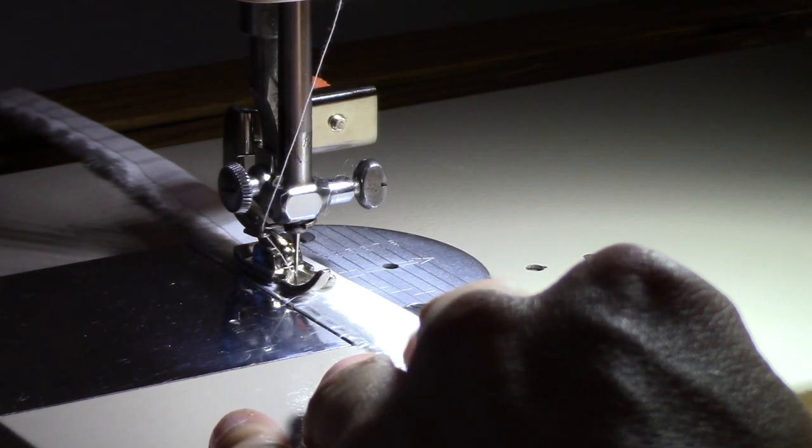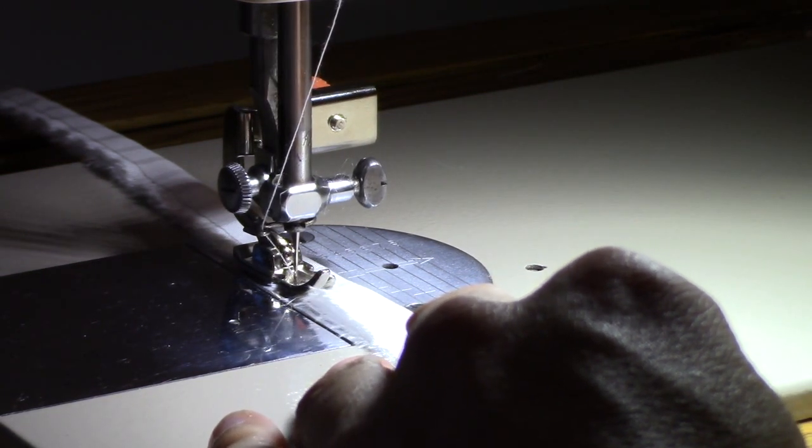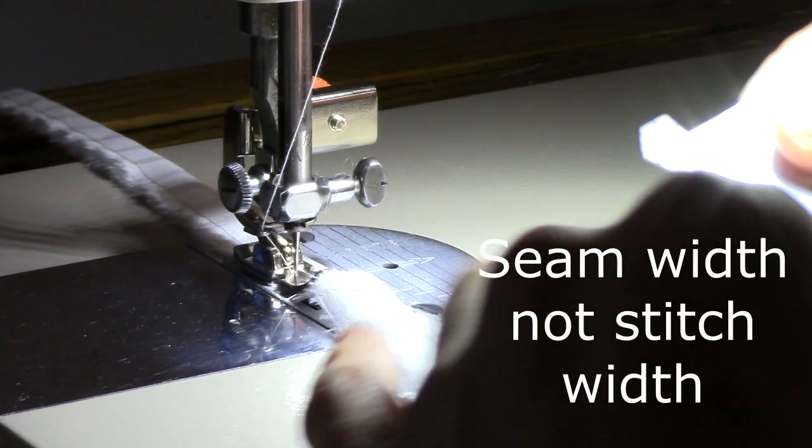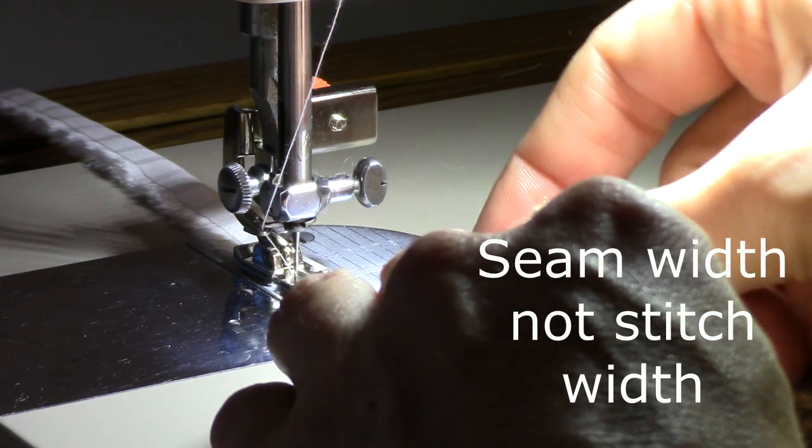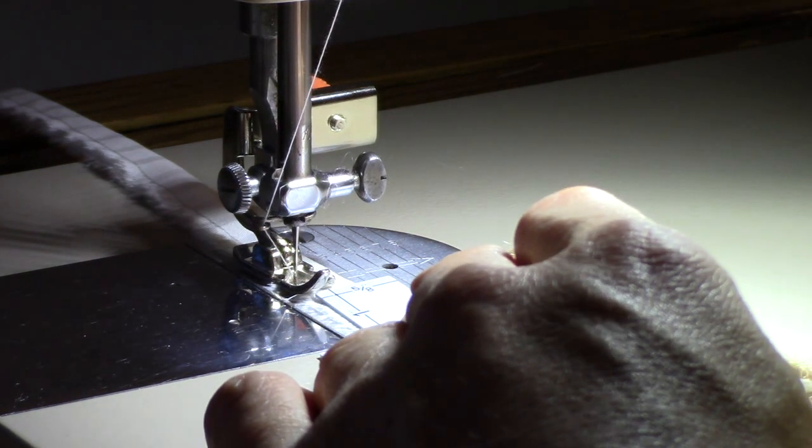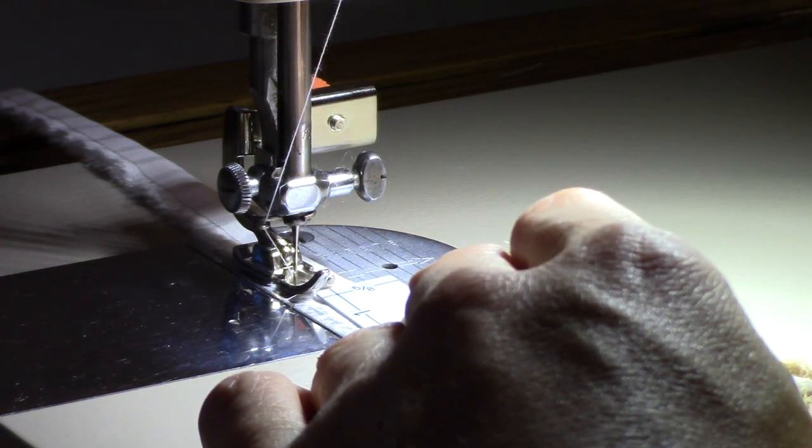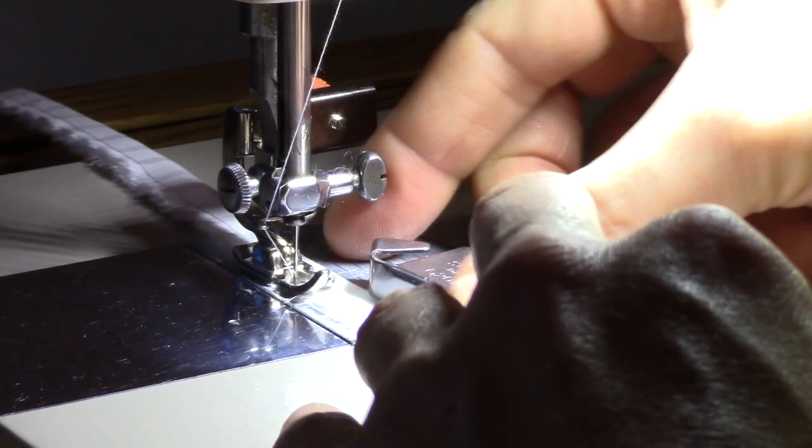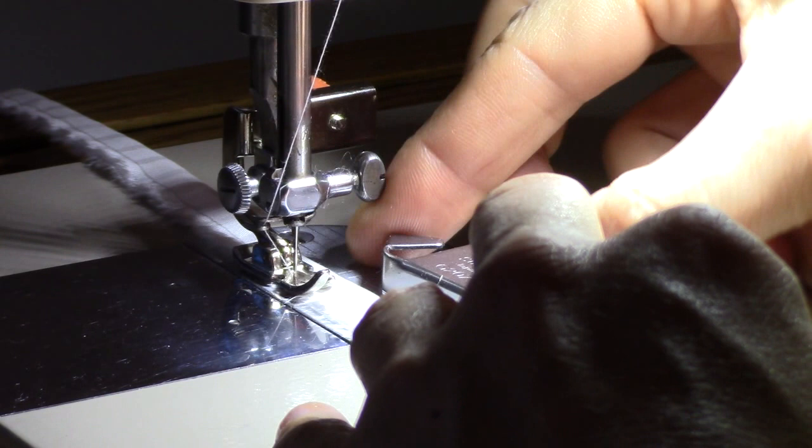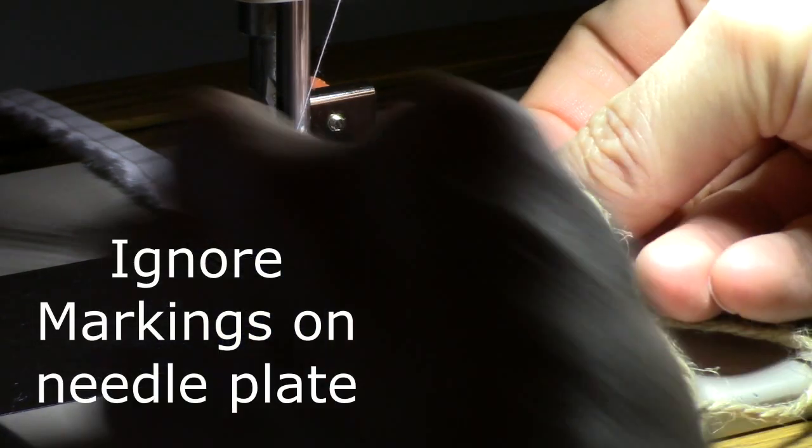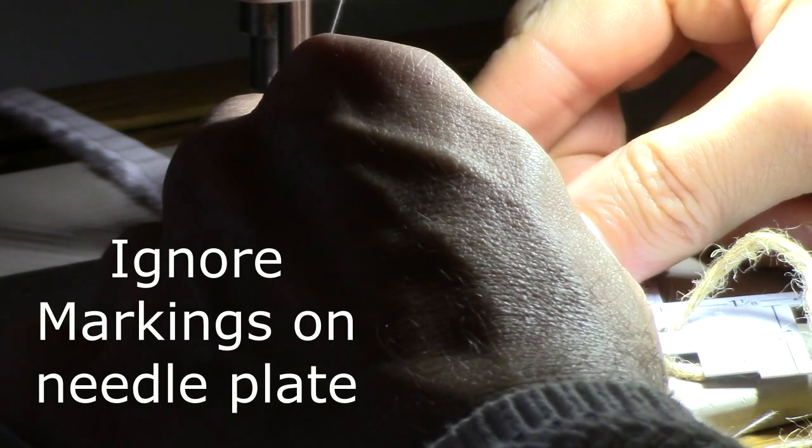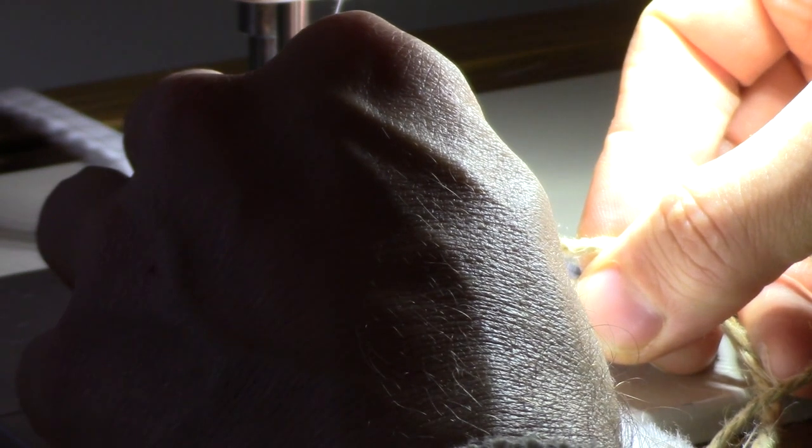The only time you need to worry about it is if your stitch width changes, in which case all you have to do is put on a magnetic seam guide which you can adjust and ignore the markings on your foot. And if you then line it up correctly, that is now set for five eighths.